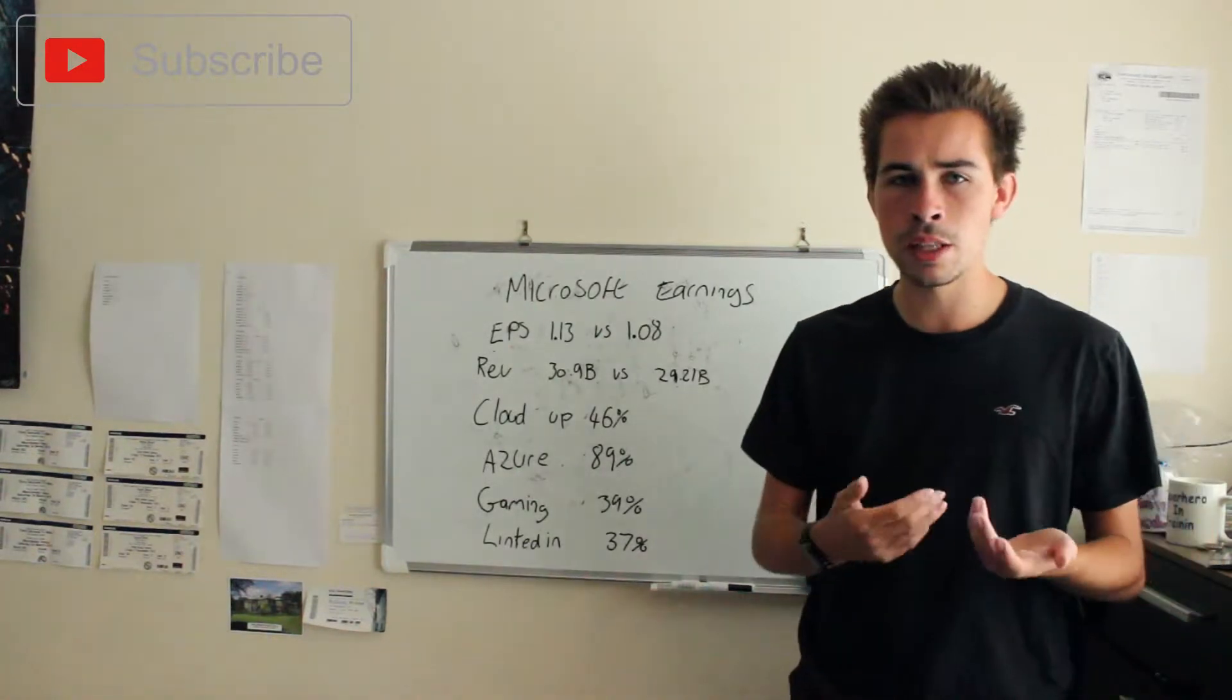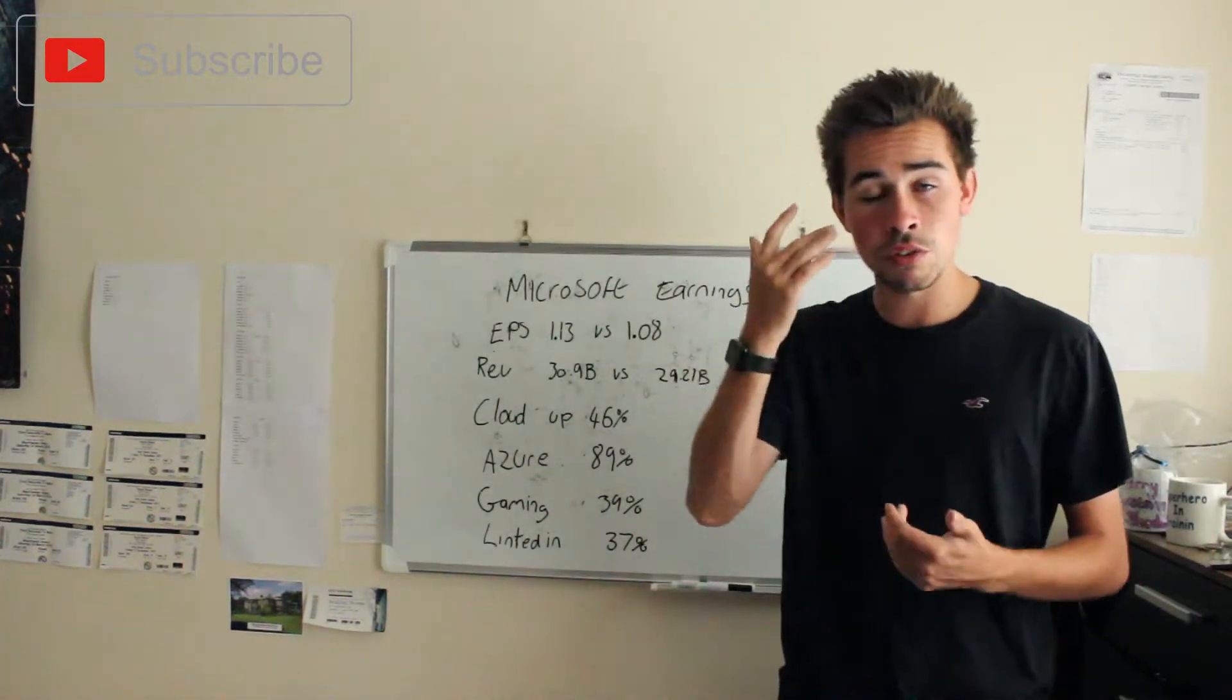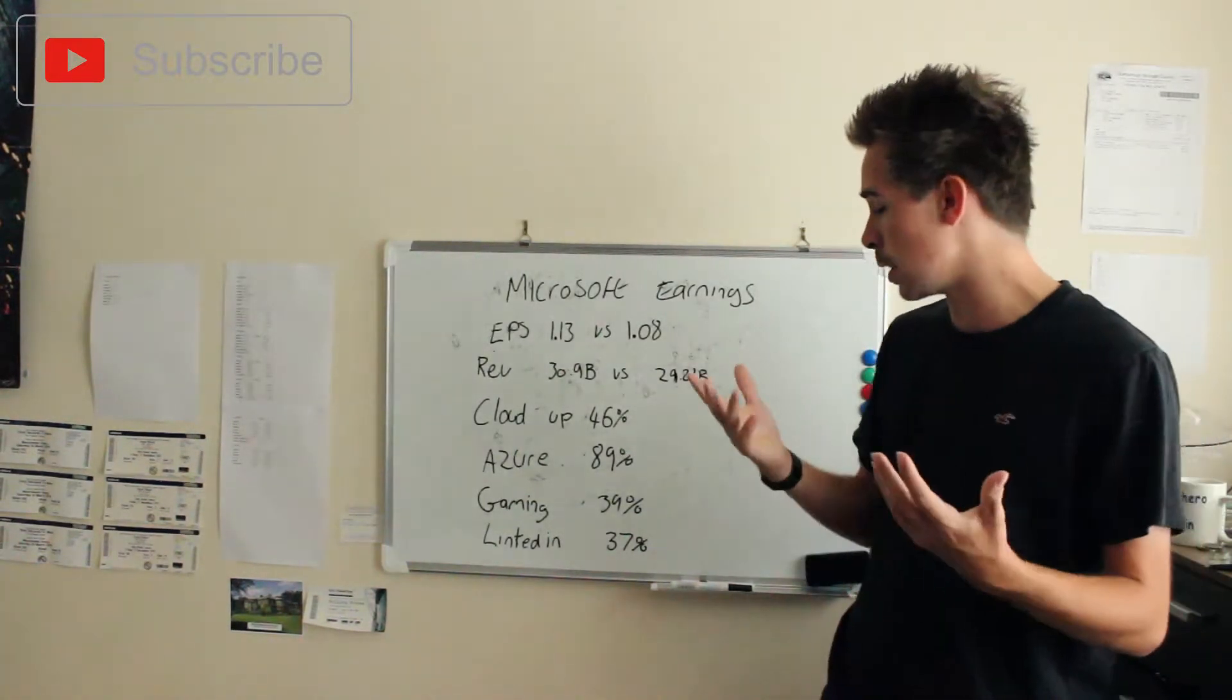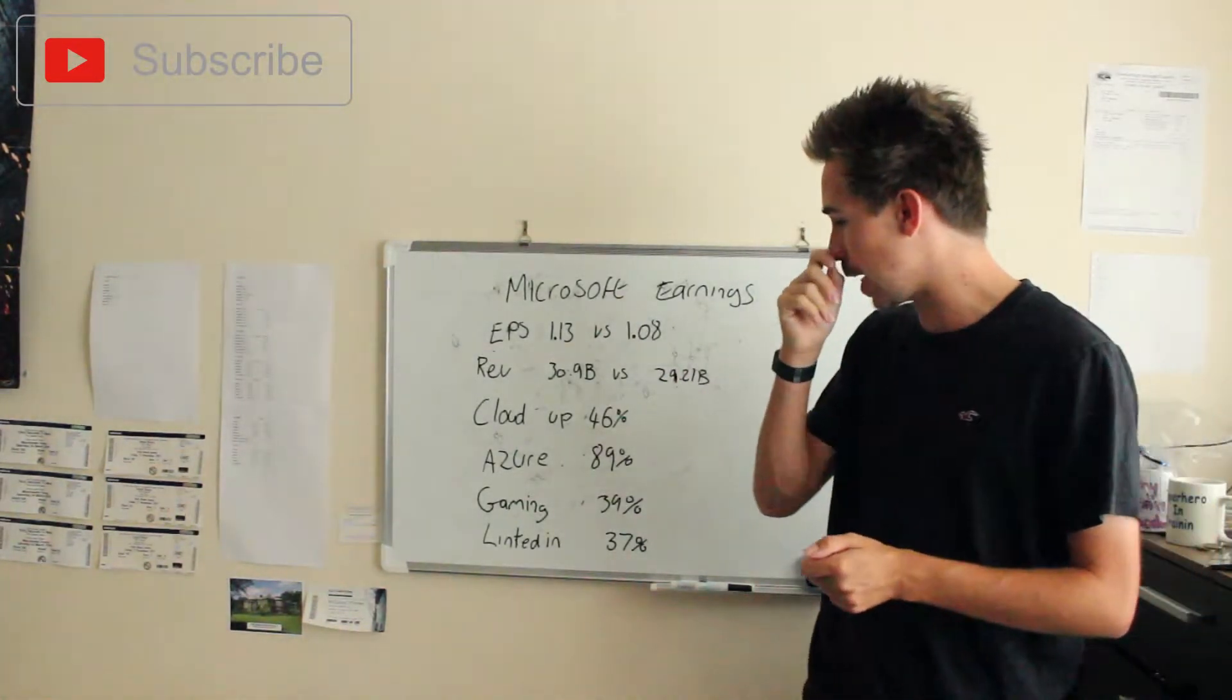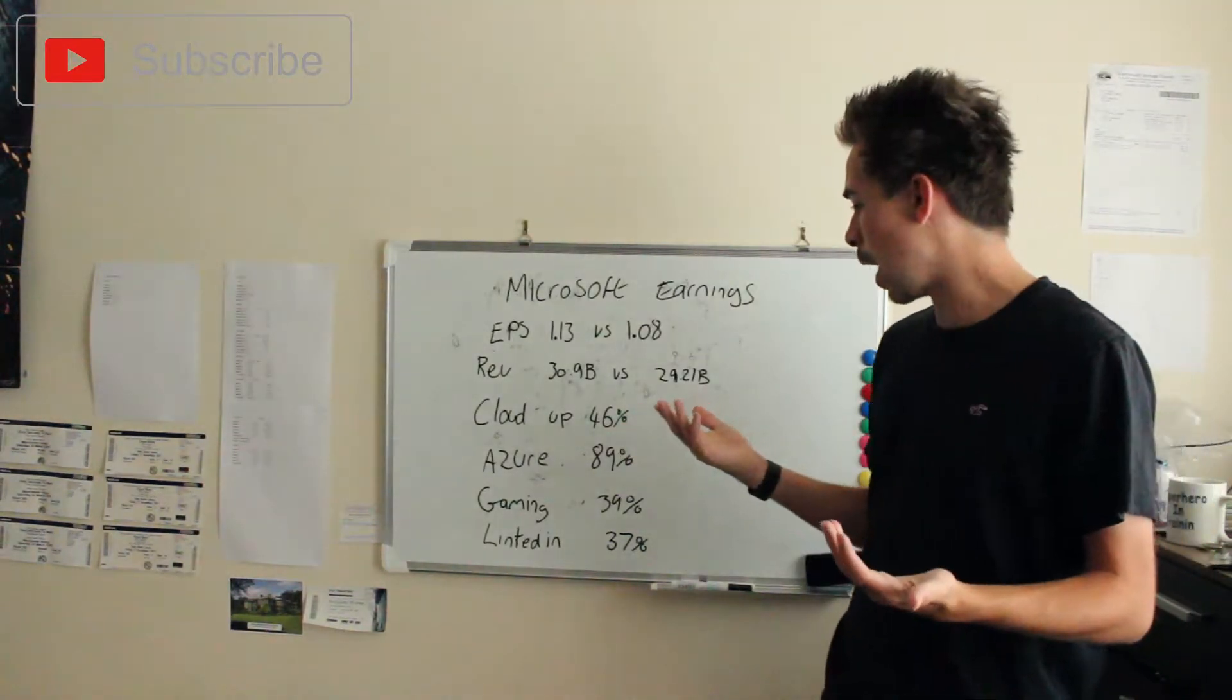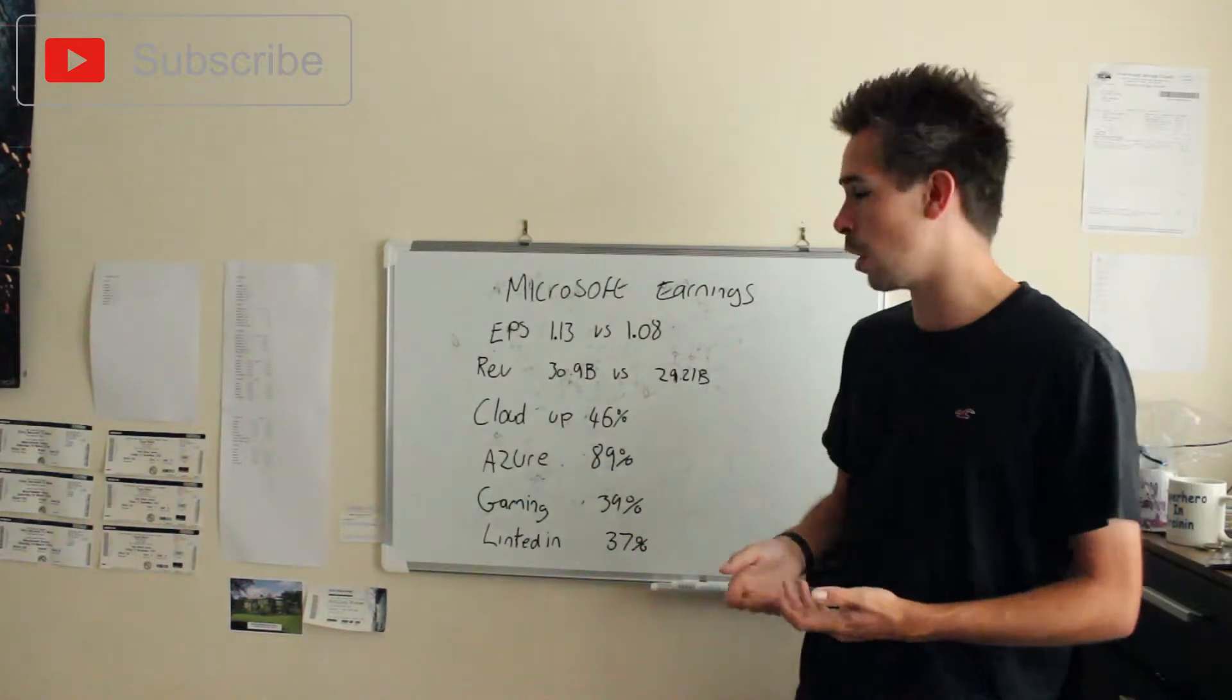Now getting into the things that really impressed me. Microsoft had a lot of growth in a lot of sectors in this earnings report and some of them were absolutely mental. The cloud was up 46%. I think now Microsoft has the second biggest cloud play out there. 46% is really good and it's one of the reasons why I got into this stock.